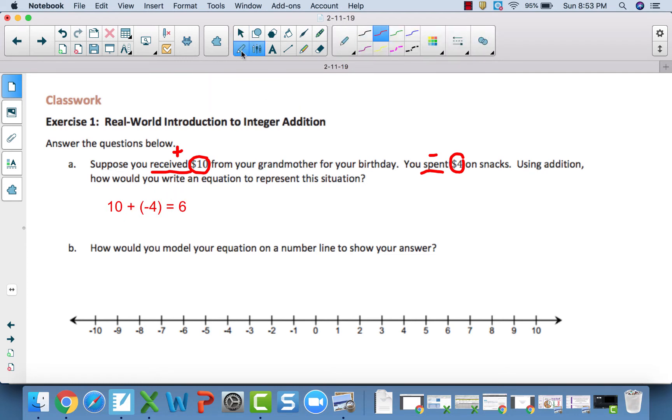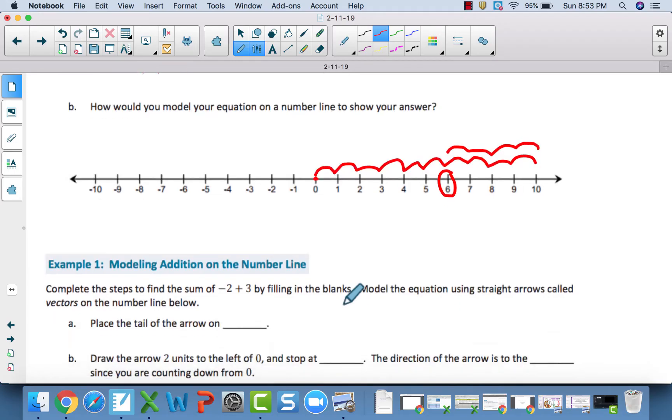Now, if we're going to use a number line to represent this situation, you start at $0. You go over $10: $1, $2, $3, $4, $5, $6, $7, $8, $9, $10. And then we learned from the last video, you go where the last number left off, which is here, and we would go to the left $4, because $4 is a negative. So $1, $2, $3, $4, and we end up right at $6, which is the answer to our question. All right, moving on.